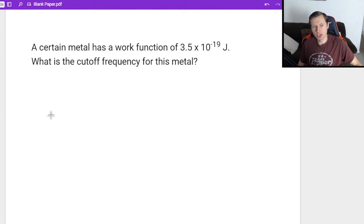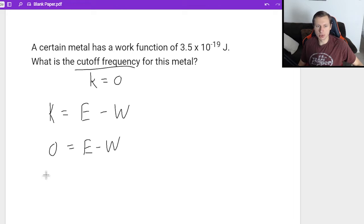So first, I'm going to set up the equation k equals e minus w. When we start talking about cutoff frequencies, one thing I forgot to mention, that is going to be the frequency where k equals 0. So what I'm going to say is 0 equals e minus w, add w to both sides, you get the work function equals e. So in other words, the work function is equal to the energy of the photon. And that's what the cutoff frequency is all about.